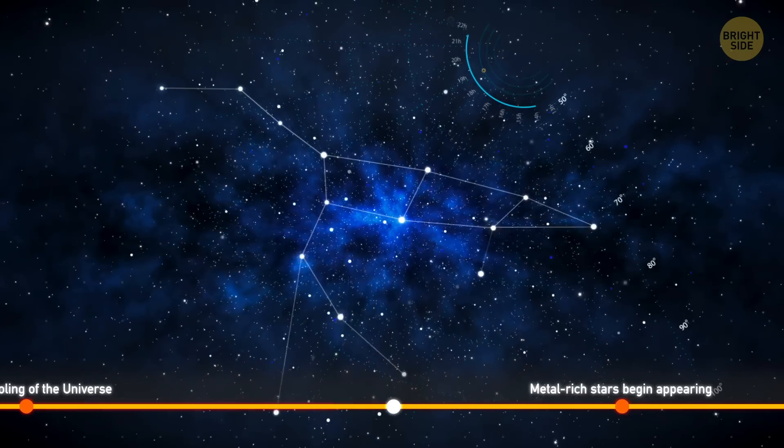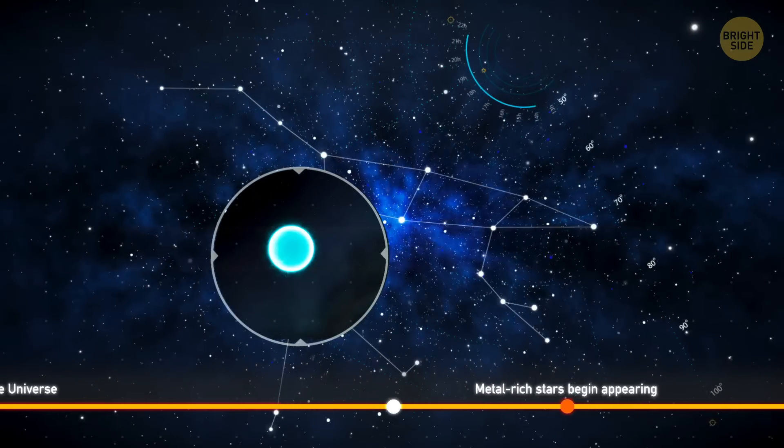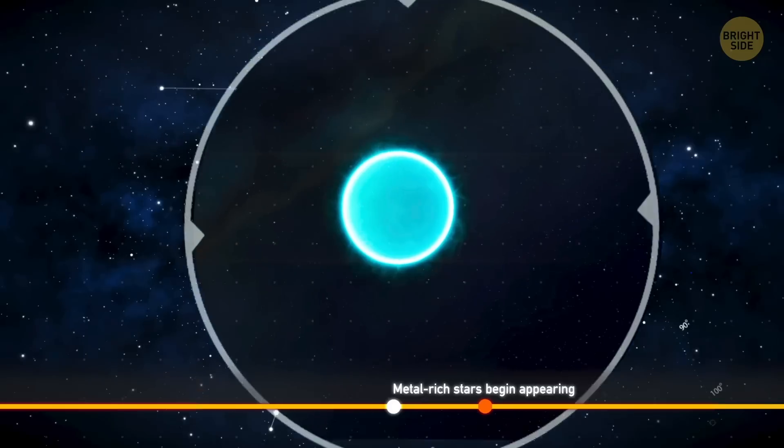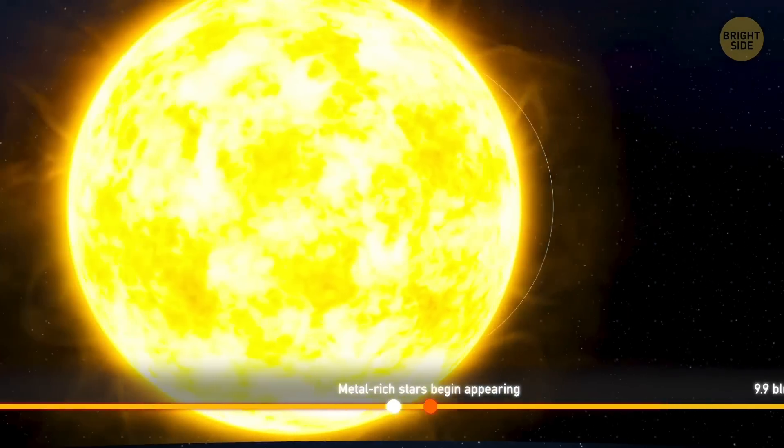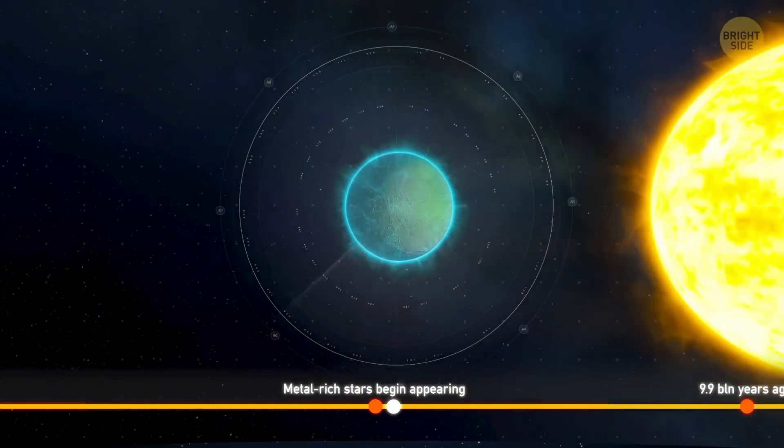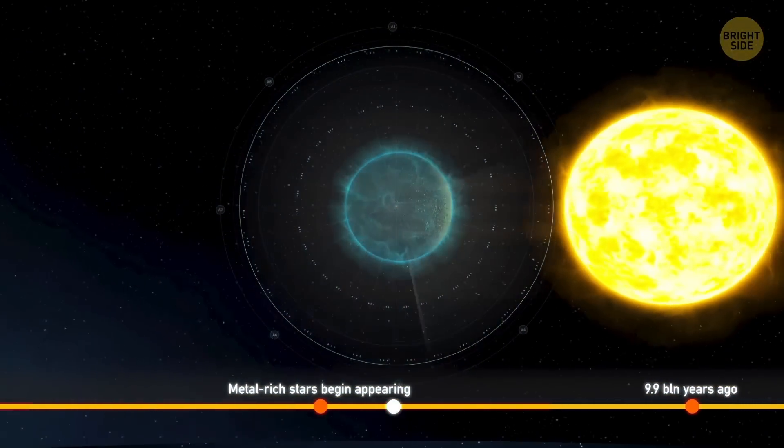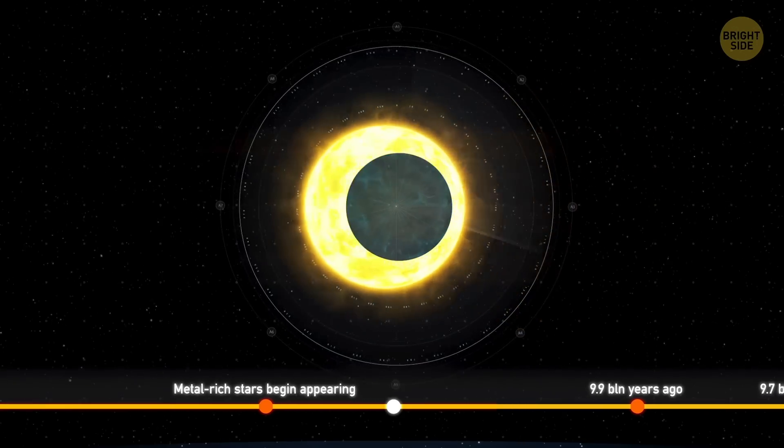Powerful galactic cores and newborn stars stopped sending out so much energy into space, and the first metal-rich stars began appearing. Metals made them cool down at a higher rate, so the universe stepped on its track to becoming habitable.